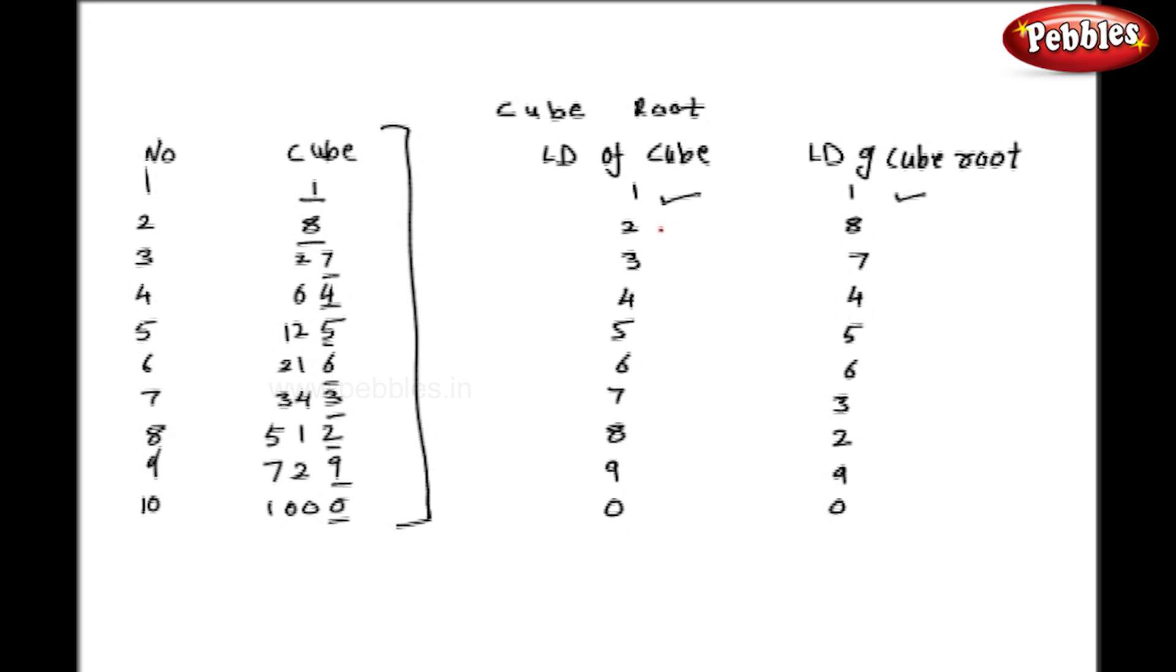As you can see, whenever the cube has 1 as a last digit, the cube root will also have 1 as a last digit, and so on as per chart number 2. But you have to remember chart number 1 very thoroughly.